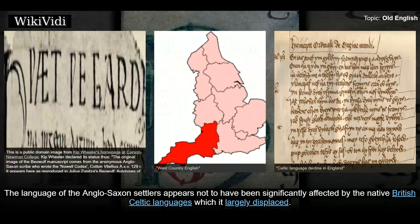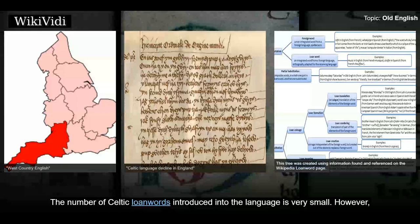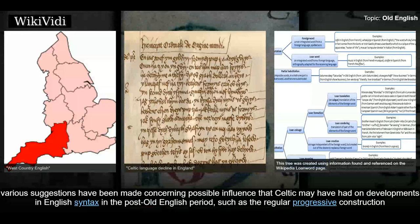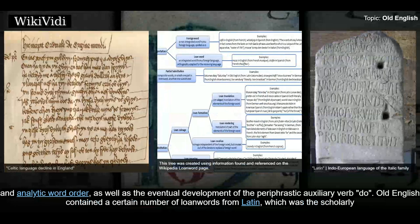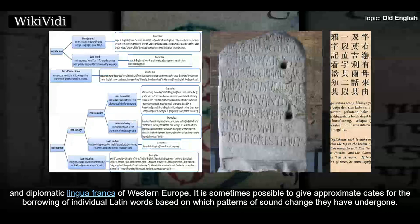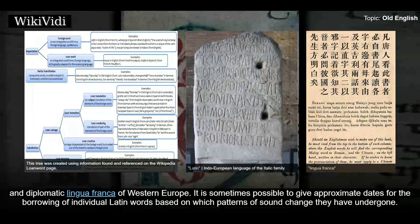The language of the Anglo-Saxon settlers appears not to have been significantly affected by the native British Celtic languages which it largely displaced. The number of Celtic loanwords introduced into the language is very small. However, various suggestions have been made concerning possible Celtic influence on developments in English syntax in the post-Old English period, such as the regular progressive construction and analytic word order, as well as the eventual development of the periphrastic auxiliary verb 'do.' Old English contained a certain number of loanwords from Latin, which was the scholarly and diplomatic lingua franca of Western Europe.